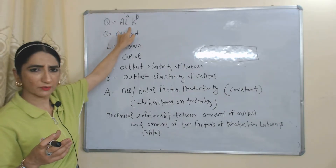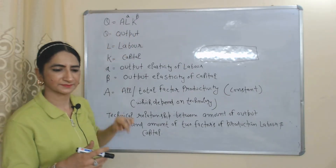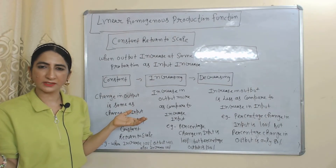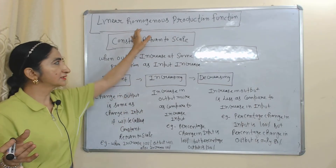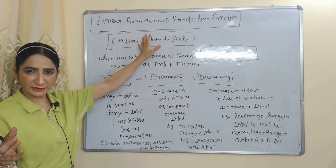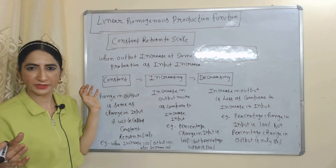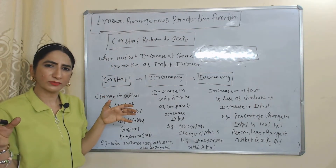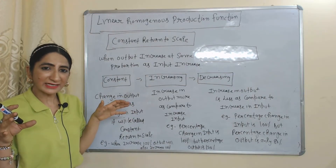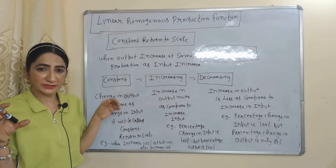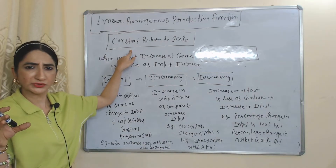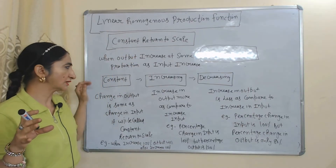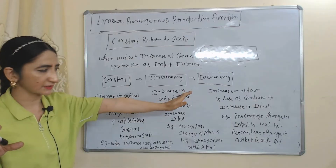This production function mainly tells us the technical relation between the amount of output and the two factors of production, labor and capital. The most important property of the Cobb-Douglas production function is that it is a linear homogeneous production function, meaning it is based on constant return to scale. As we know, there are three returns to scale: constant, increasing, and decreasing.